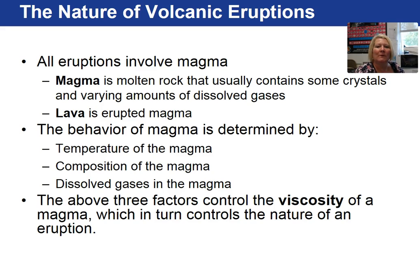What determines the behavior of magma? One factor is temperature, composition is another, and the amount of dissolved gases in the magma. Temperature, composition, and dissolved gases control the viscosity of a magma, which is very important in determining how an eruption will occur — that is, will it be a violent volcanic eruption, or will it simply be a quiet, non-violent eruption?